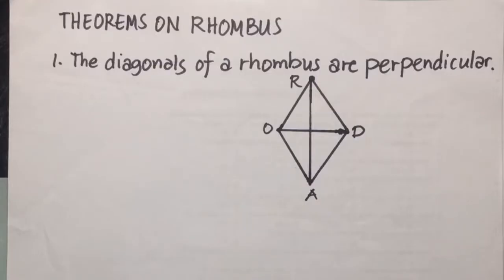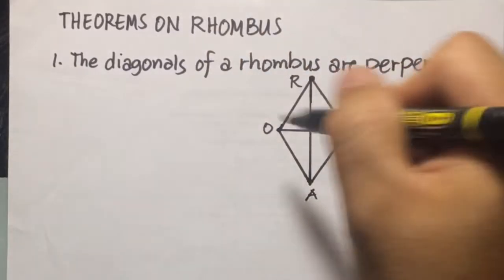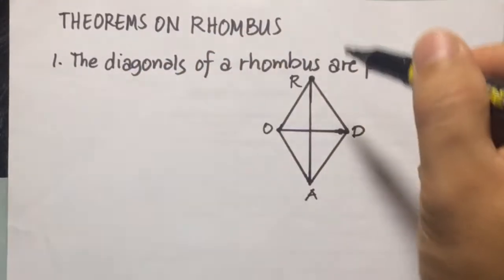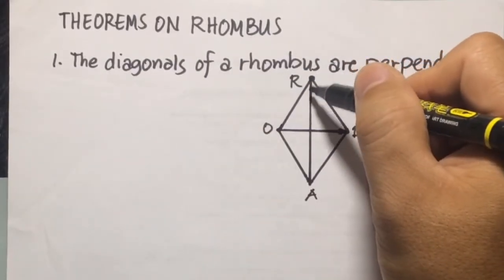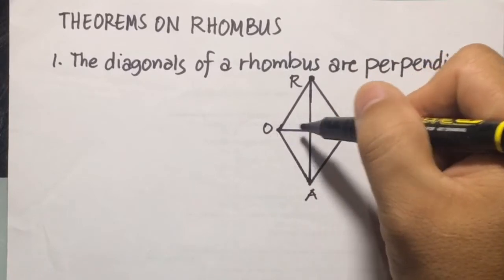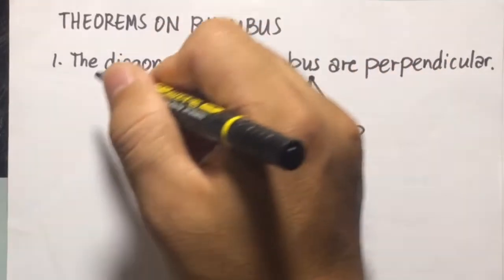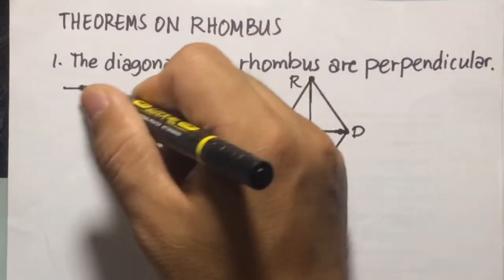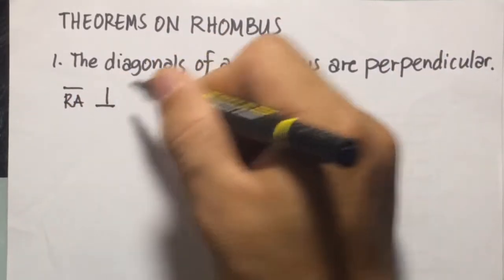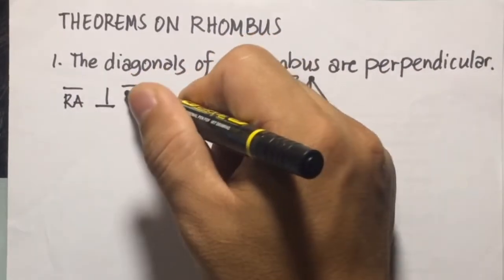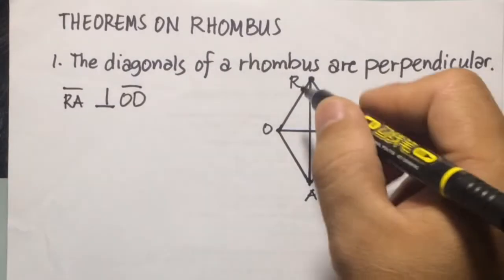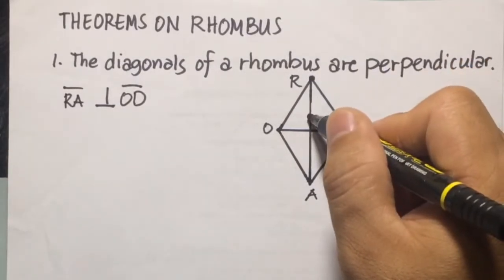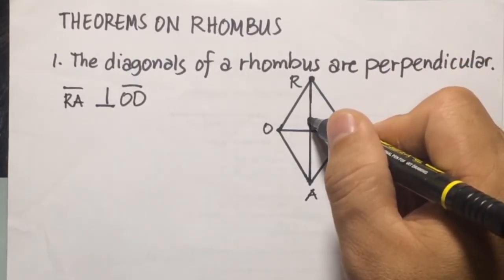Theorem number 1: The diagonals of a rhombus are perpendicular. We have rhombus RDAO, and its diagonals are perpendicular, so we can say that diagonal RA and OD are perpendicular — line segment RA is perpendicular to line segment OD. This means the angles being formed are 90 degrees.